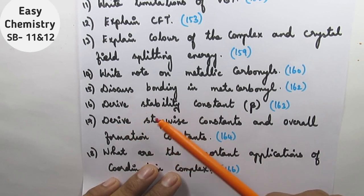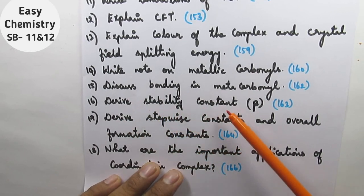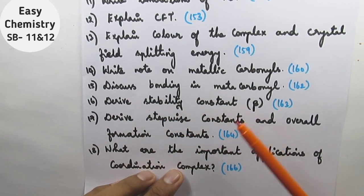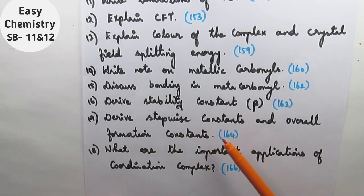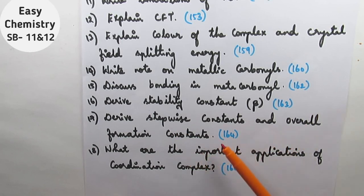Derive the stability constant beta. Derive the stepwise constant and the overall formation constant. This is page 164.